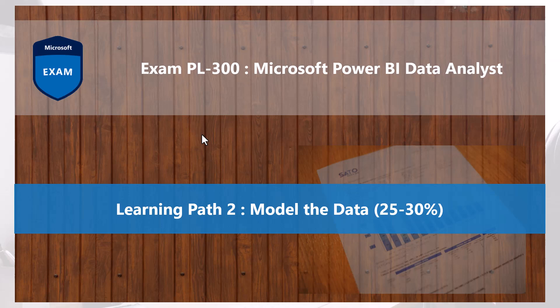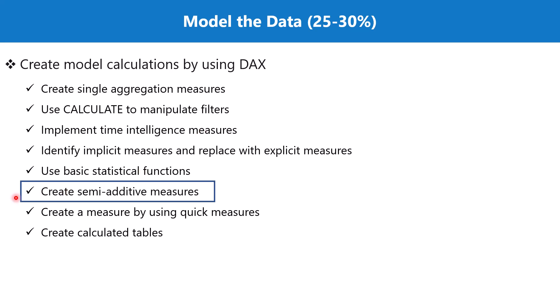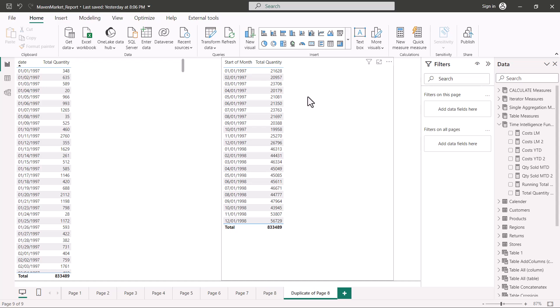Bismillahirrahmanirrahim. Hello everyone, welcome back to the PL-300 exam preparation series where we are having a look at the second learning path: Model the Data. In this video we are going to cover the topic 'Create Semi-Additive Measures', which is part of the section 'Create Model Calculations by Using DAX'. Before I explain what semi-additive measures are, let's look at a very simple scenario so that a basic understanding can be made.